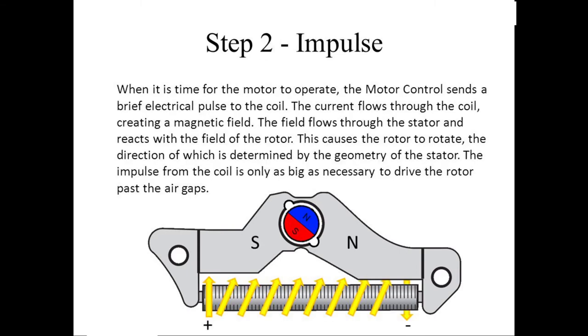Step 2: Impulse. When it is time for the motor to operate, the motor control sends a weak electrical pulse to the coil. The current flows through the coil, creating a magnetic field. The field flows through the stator and reacts with the field of the rotor. This causes the rotor to rotate in a direction which is determined by the geometry of the stator. The impulse from the coil is only as big as necessary to drive the rotor past the air gap.